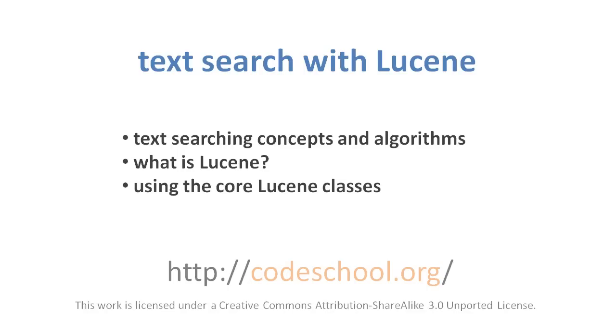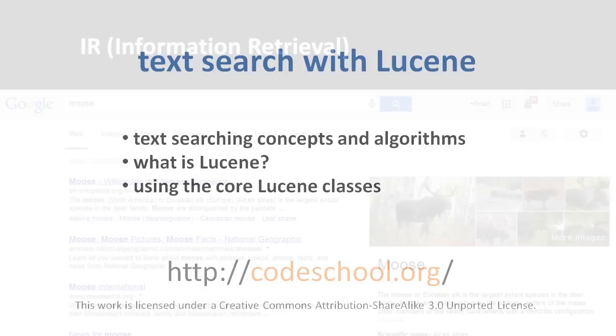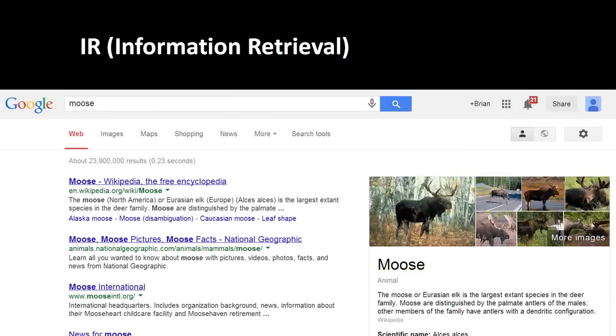In this video, I'm going to give a broad conceptual overview of the Lucene text search library, and I'll introduce basic use of its API. Lucene is a kind of information retrieval system, or IR system for short.